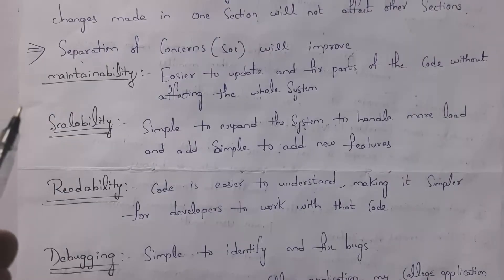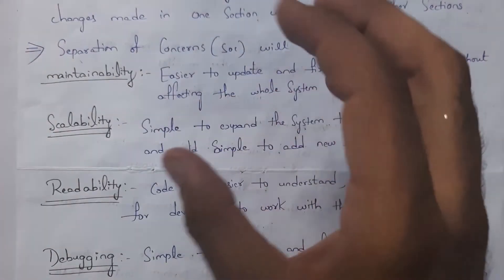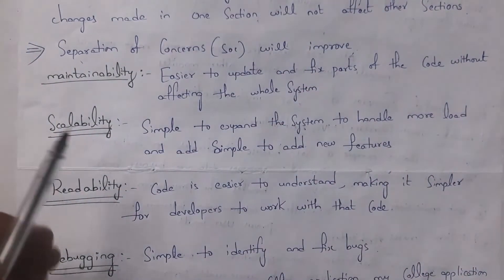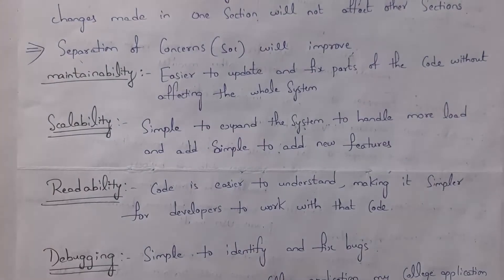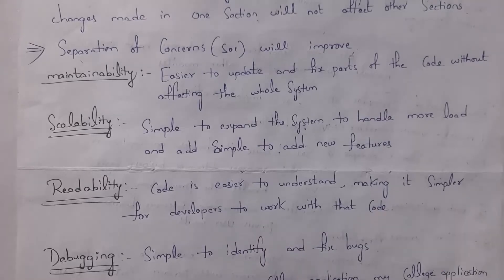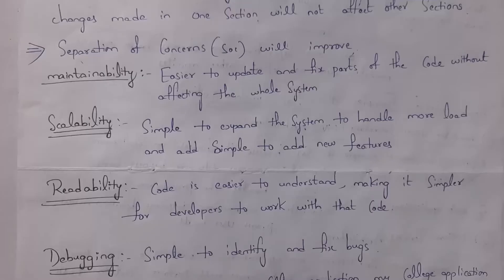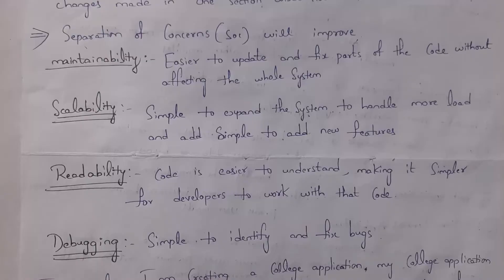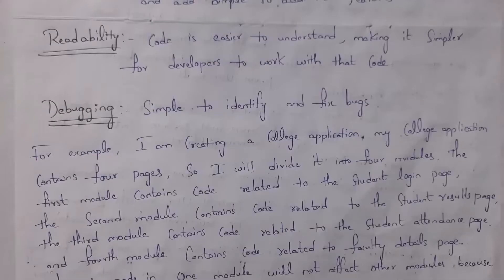The separation of concerns will improve maintainability — that is, updating a specific part of code without updating the entire code. It will also improve scalability, meaning we can easily add new features to that particular software. It will also improve readability. If we store complete code in one place, it is very hard to read, but if we separate code into various sections, it is easy to understand. And fourth, separation of concerns will improve debugging. As the complete code is separated into various sections, we can easily find and fix errors.